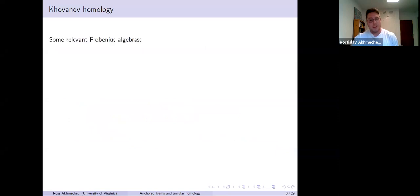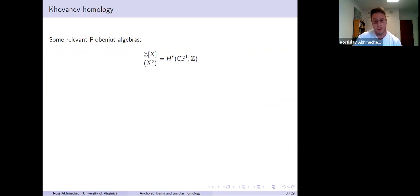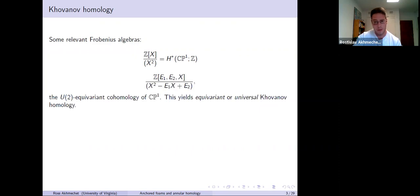In Khovanov homology, I'll highlight two really relevant Frobenius algebras, or equivalently TQFTs. Probably the most familiar one is Z[X] mod X squared. The ground ring is just the integers, so you view this as an abelian group, and this is the cohomology of CP1. And then there's this bigger Frobenius algebra: Z adjoined E1, E2, and X mod this quadratic relation. This is the U2-equivariant cohomology of CP1, and the ground ring here is Z adjoined E1 and E2. When you define the chain complex using this Frobenius algebra, you get what's called equivariant or universal Khovanov homology.